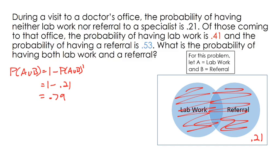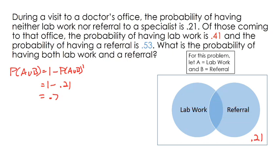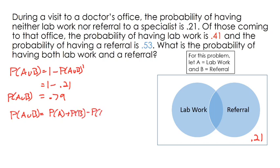Because everything within the circles plus everything outside the circles adds up to 1, we have figured out that the probability of A or B is 0.79. Let's go to our addition rule because that relates a lot of these probabilities together. We know the probability of A or B equals probability of A plus probability of B minus probability of A and B. We've figured out probability of A or B is 0.79, and probability of A — lab work — is 0.41, and probability of B is 0.53.